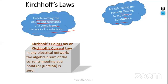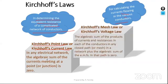Kirchhoff's Point Law or Current Law states: in any electrical network, the algebraic sum of the currents meeting at a point or junction is zero.